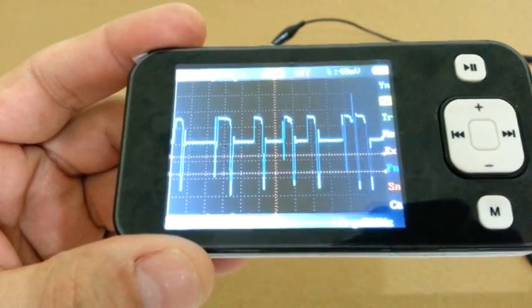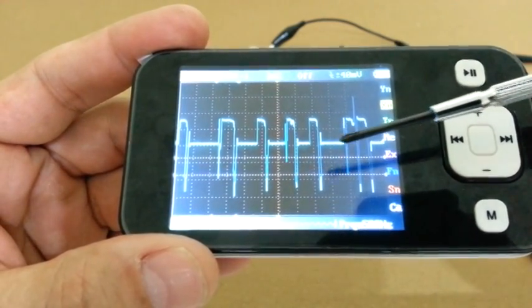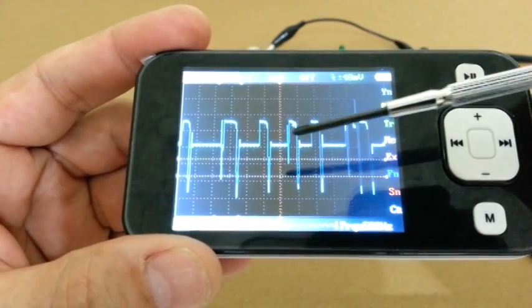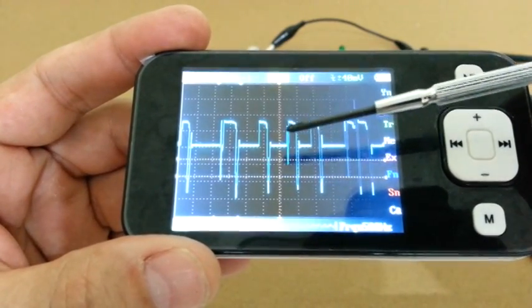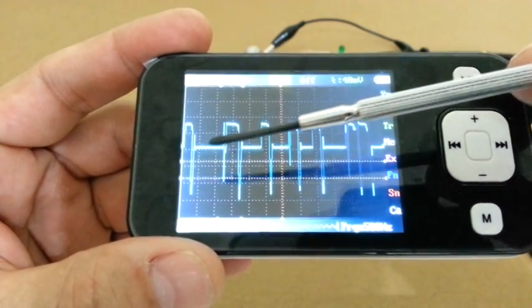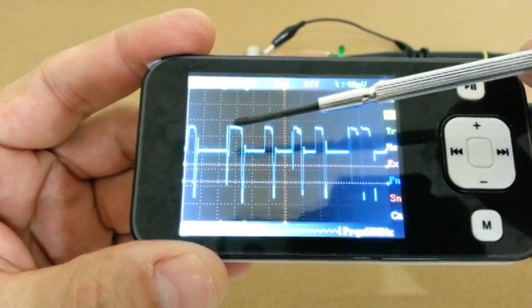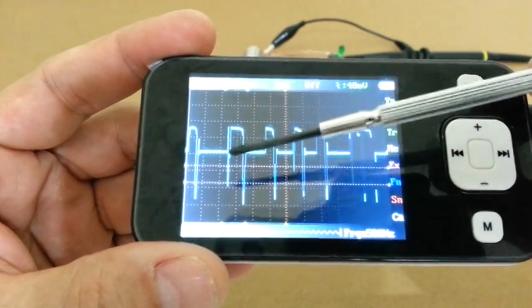We have here the baseline of 1.5 volts of the battery and each division corresponds to 1 volt. So we can see that when the inductor is connected, the voltage goes up about 1.5 volts. And the inductor is then disconnected and the voltage goes down another 3 volts.